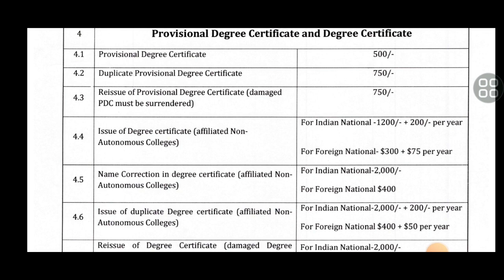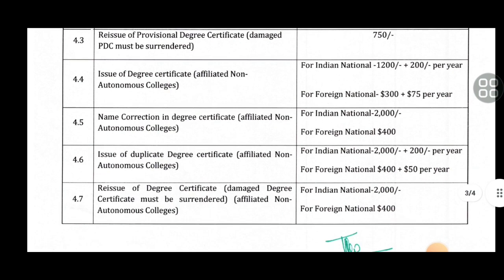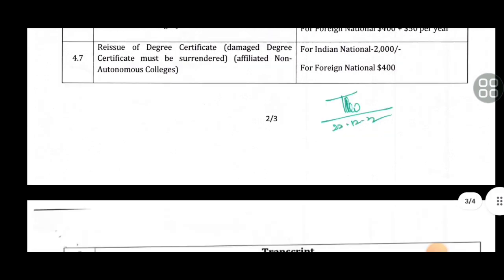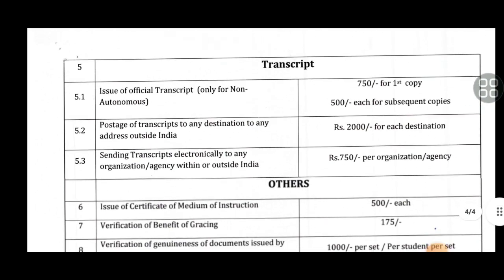Degree certificate — already in the nation, already in the restaurant per year. For foreign dollar, from under the past. For India — per year, for foreign national dollar, for hundred. Duplicate degree certificate again — non-autonomous college. For national India, it's stored per year; for foreign, dollar fifty for a year.